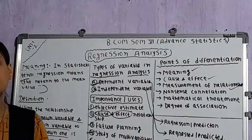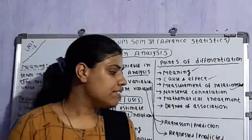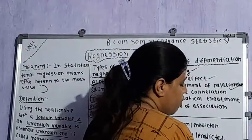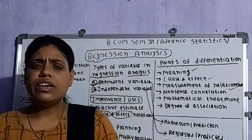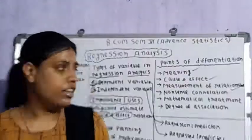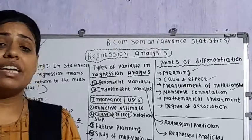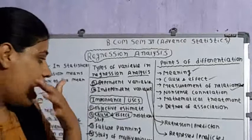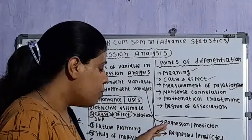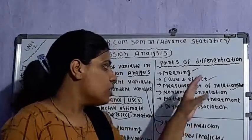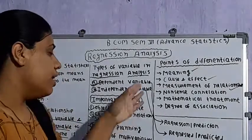The third point is measurement of relationship. Correlation analysis measures the degree of association between two variables — we observe how strongly X and Y are related to each other. But regression analysis helps us predict the value of one variable with the help of another variable. For example, if price changes, regression analysis can tell us how much change there will be in demand due to that changed price.